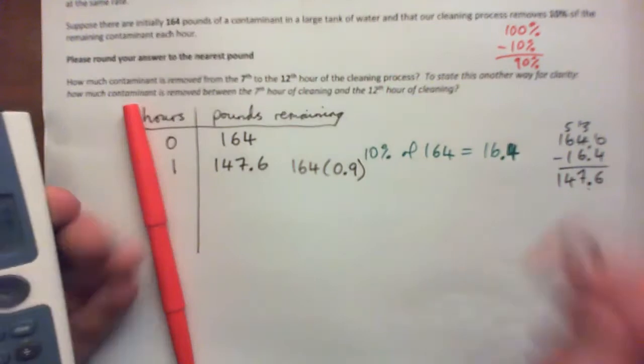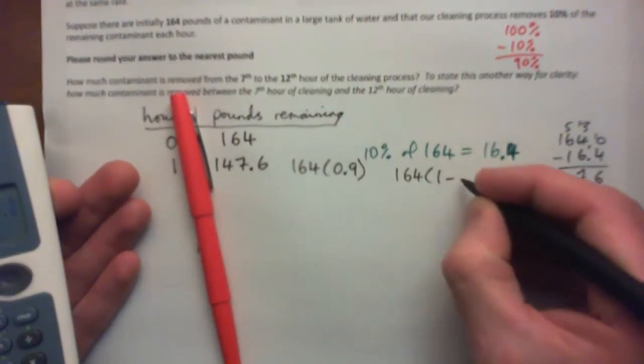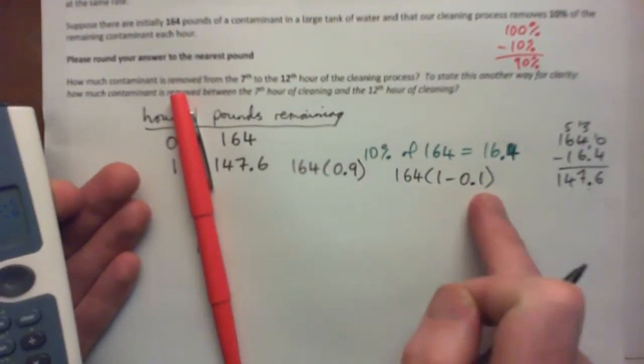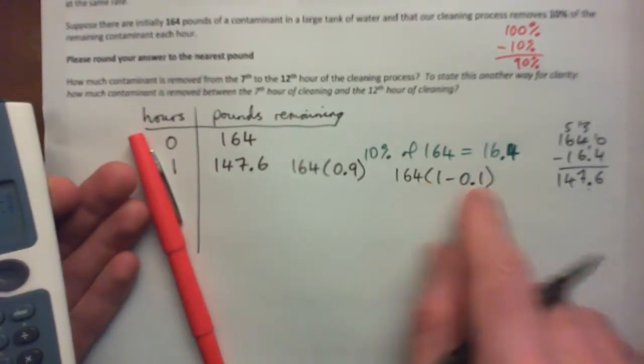So that's useful. And in fact, or you can think of it this way. It's 164 times 1 minus 0.1, or 1 minus 10%. Or 100% minus 10%, same thing.